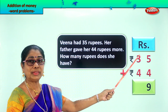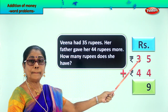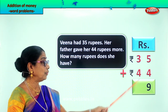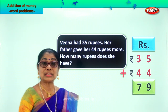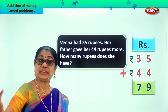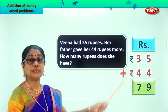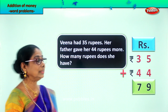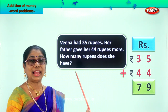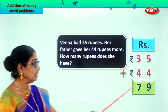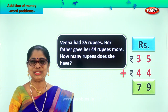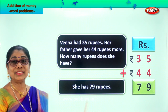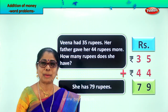In the tens place we have 3 and 4. Three plus four is seven, so we write down 7. So Veena had 35 rupees, her father gave her 44 more. 35 plus 44 gives a total of 79 rupees. She has 79 rupees altogether. That is the answer.